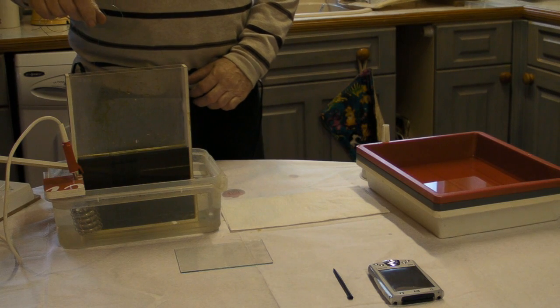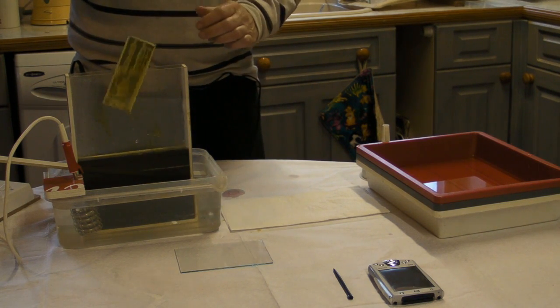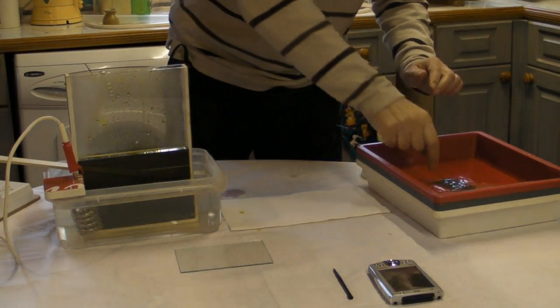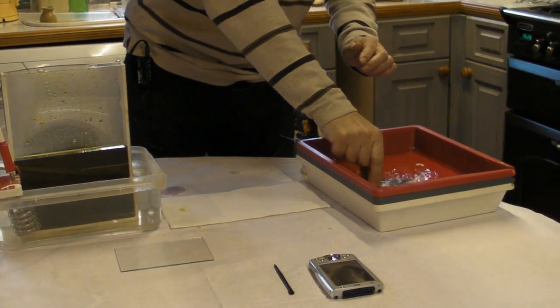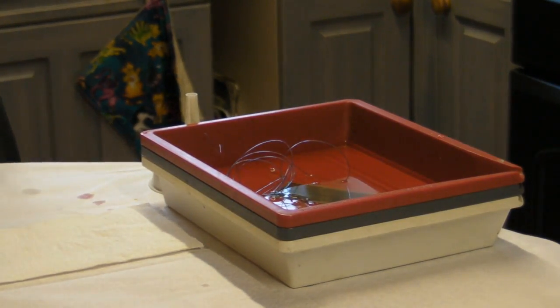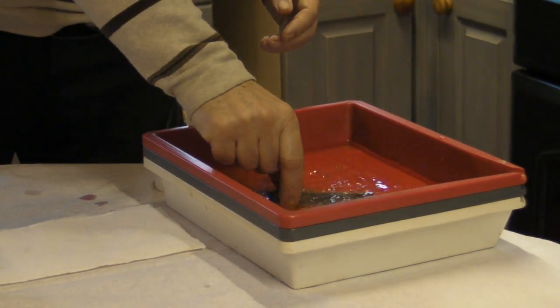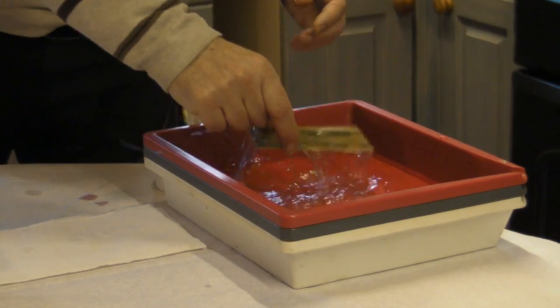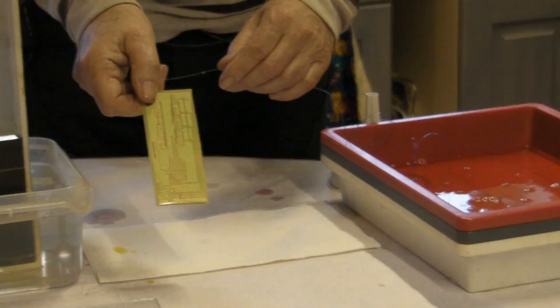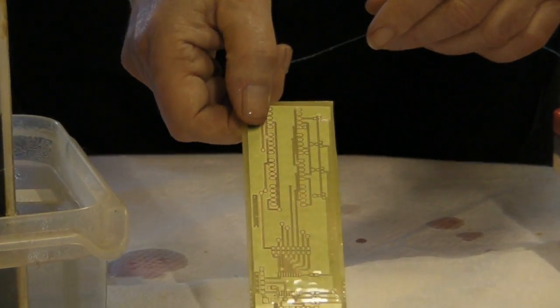So it's about finished now. So we'll take it out of the hot ferric chloride and put it straight into some water to stop it continuing to etch. And give it a good wash. So that's the board. The finished board.